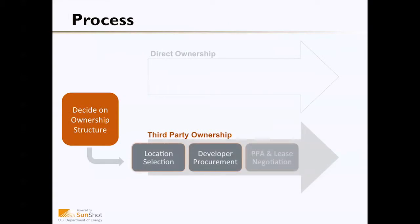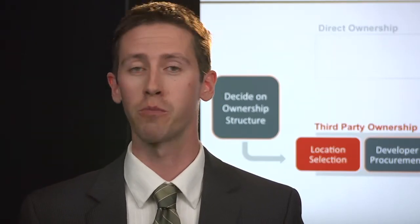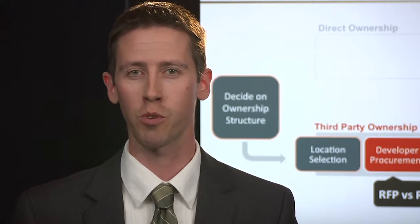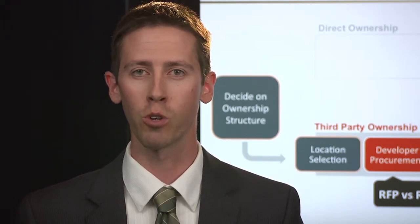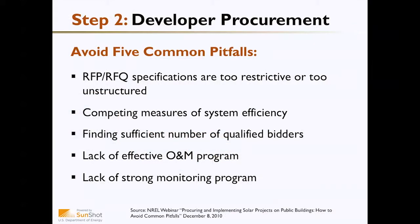Next is the process for third-party ownership. Location selection is the same as for direct ownership. The key difference is in development and procurement, where a municipality has the choice between an RFP process — request for proposals — or an RFQ process — request for qualifications. It's important for a municipality to think through developer procurement carefully.